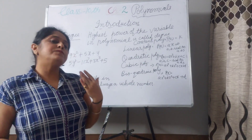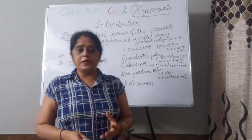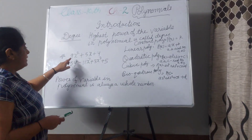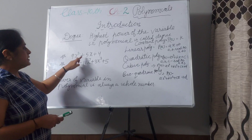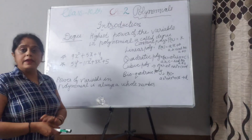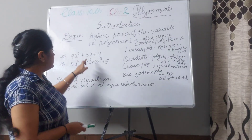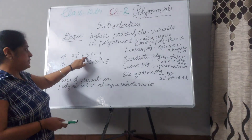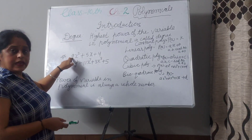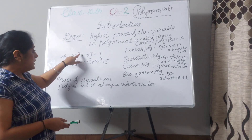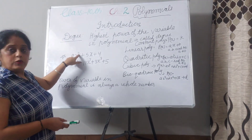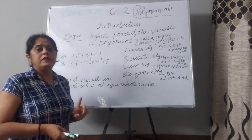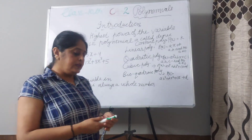Now let's talk about degree. The highest power of the variable is called the degree. For example, in 9x² plus 5x plus 4: x is the variable, 9 and 5 are constants, and the highest power is 2 — so the degree of this polynomial is 2.